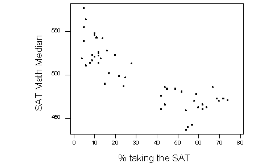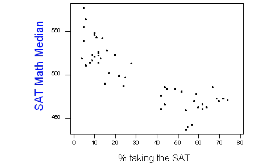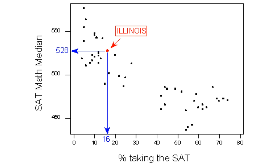The following scatter plot displays the relationship between the percentage of students taking the SAT and the median SAT math scores in each of the 50 states. The explanatory variable is the percent taking the SAT in each of the 50 states, and the response variable is the SAT math median score in each of the states. Each data point on the scatter plot represents one of the states.